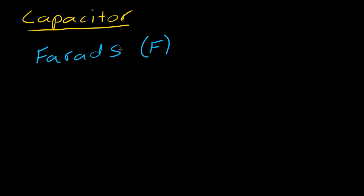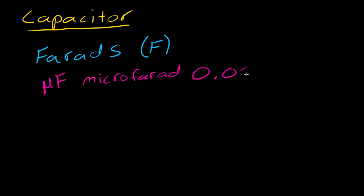One Farad is a very, very large value for our type of electronics work — we won't even be dealing with full Farads. Instead, we will mainly be dealing with the microfarad, denoted by the symbol µF. A microfarad is one millionth — 0.000001 — of a Farad.